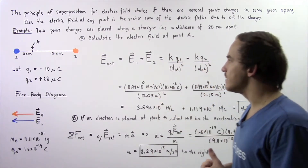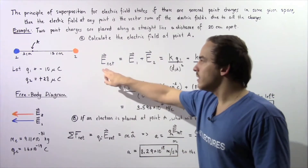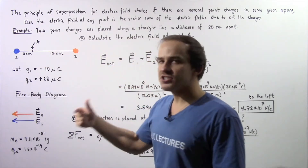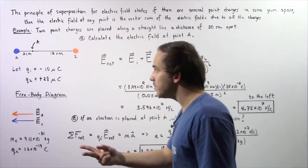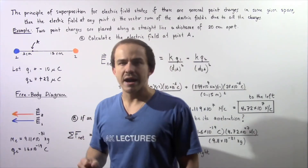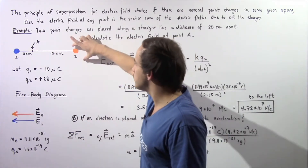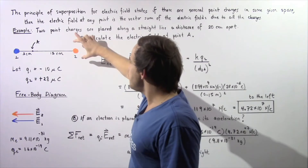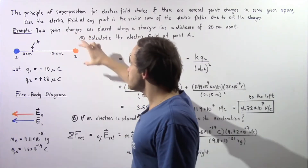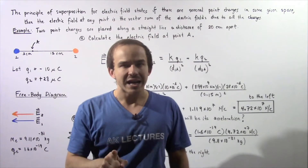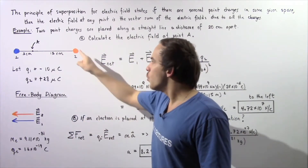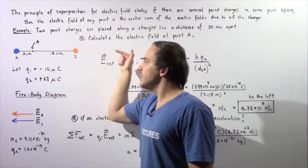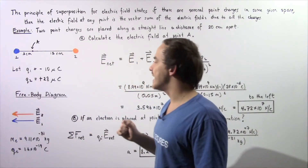Let's begin with part A. To calculate the net electric field, we have to determine all the electric fields acting at point A as a result of the other point charges. Since we have two point charges, we have to consider two electric fields — one from each point charge.